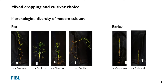I will explore these concepts on a specific mixture with the legume pea and the cereal barley. First I would like to show the diversity of morphologies present in modern pea and barley cultivars. It's not difficult to imagine that the selection of particular cultivars or different morphologies very much affects the interaction going on between these two crop species when grown together.